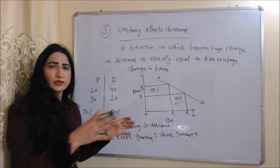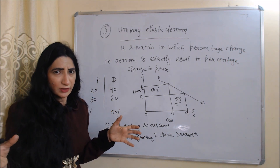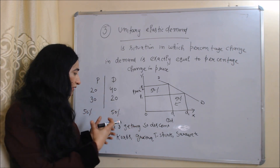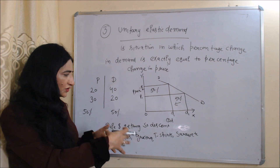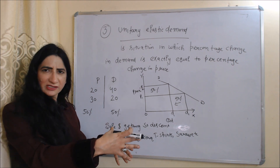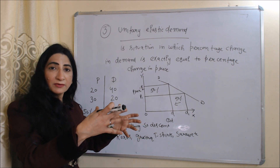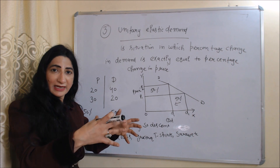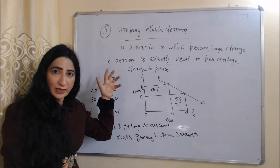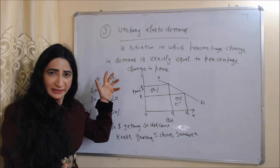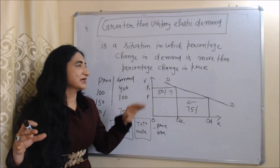For example, when a sale is going on and you get a big discount, you will buy many kurtis, groceries, t-shirts, sarees, etc. But when the sale ends, you will buy half the quantity you were buying earlier.